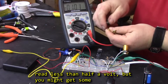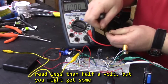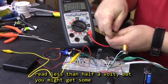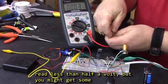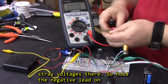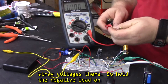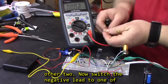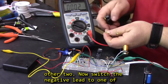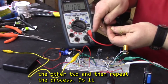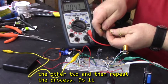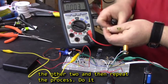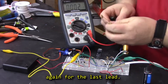In fact, it should read less than half a volt, but you might get some stray voltages in there. Hold the negative lead on one electrode, then touch the positive lead to the other two. Now switch the negative lead to one of the other two, and then repeat the process. And then do it again for the last lead.